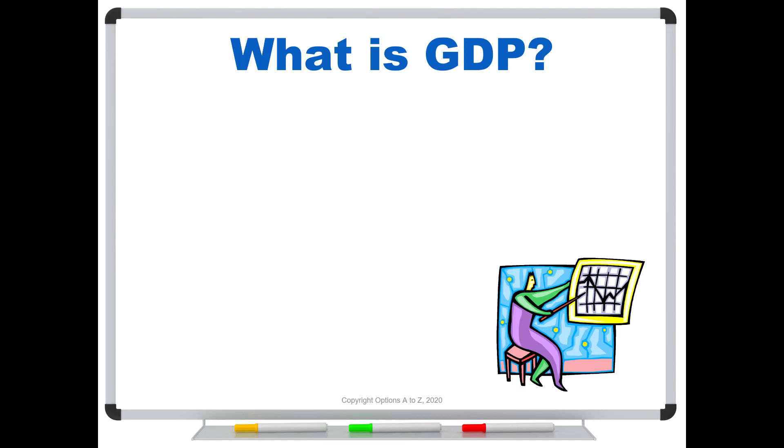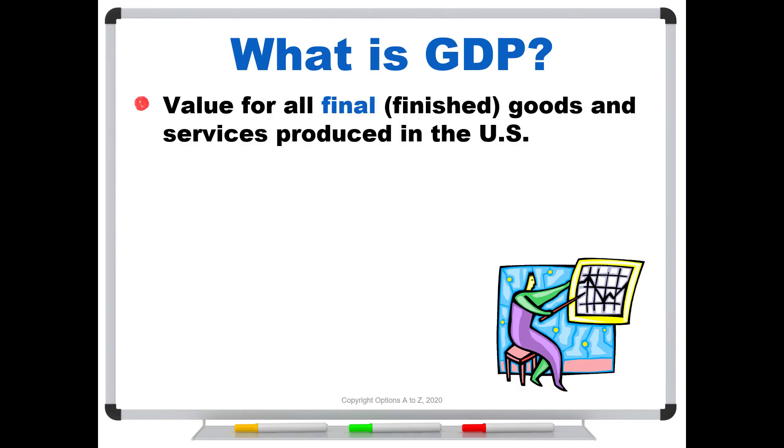So what is GDP? Well, there's a couple of definitions, and they get a little technical, but we'll look at some examples. First definition, you can say it is the value for all final or finished goods and services produced in the U.S. Or we could say it is the value added for all goods and services in the U.S. Sounds like the same thing, but it's not. Let me show you an example of why there's a difference here.